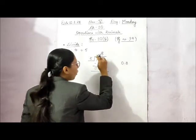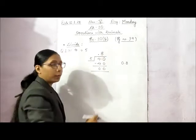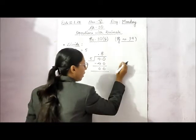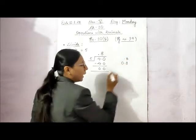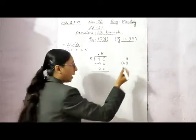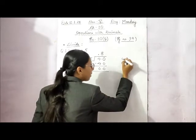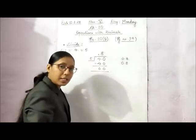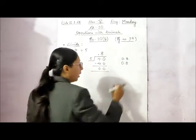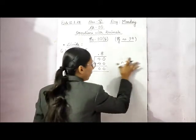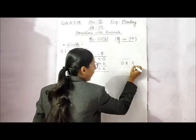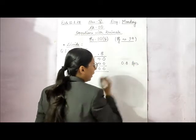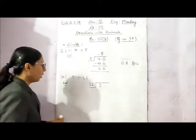Now in the table of 5, 40 comes 8 times. So after this decimal point you will write 8, because 5 times 8 is 40. The remainder is 0 and the answer is 0.8. We write 0.8, putting an extra 0 before the decimal. So 0.8 is the answer.